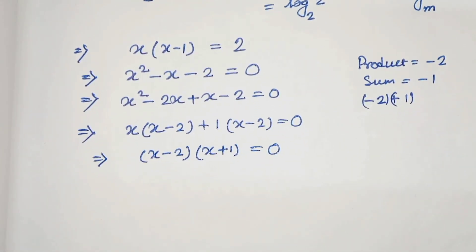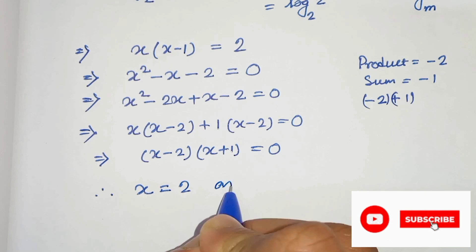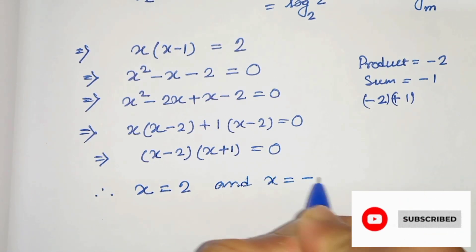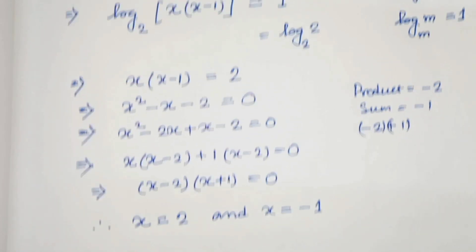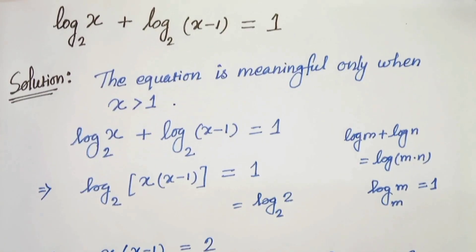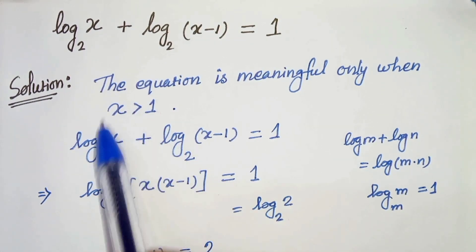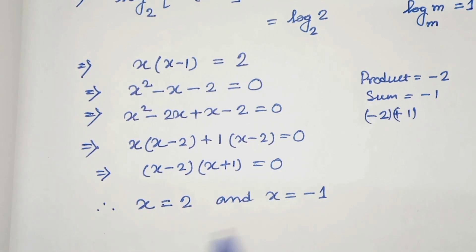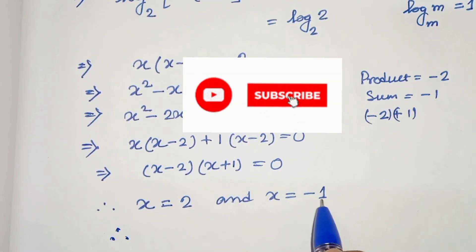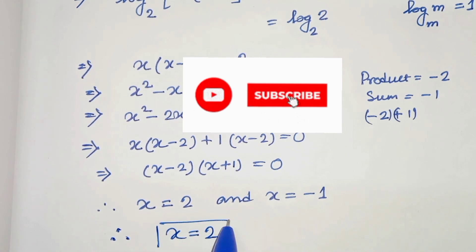So now we have two solutions: x equals 2 and x equals minus 1. From our given equation we have seen that x's value cannot be negative, so x must be greater than 1. From that we can say that x cannot be negative, so our answer is x equals to 2. This is the only solution.